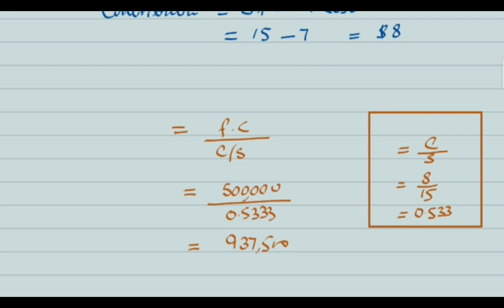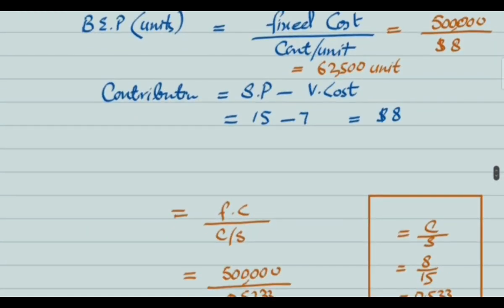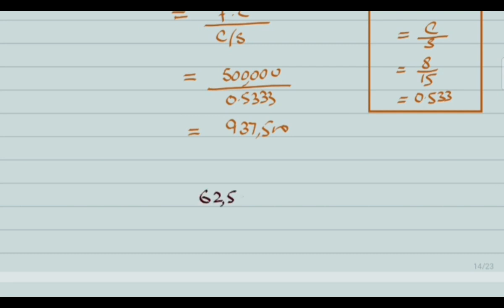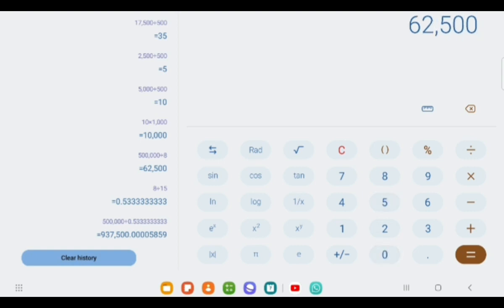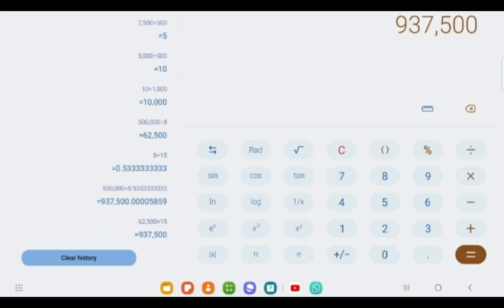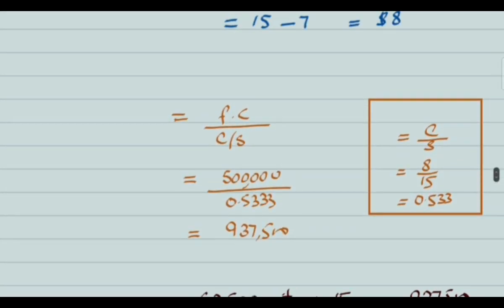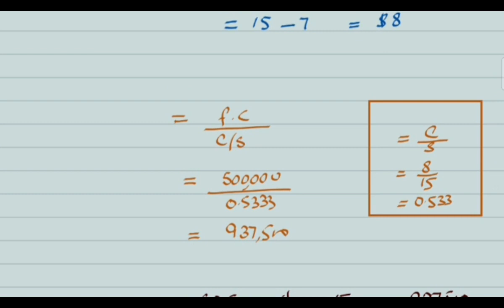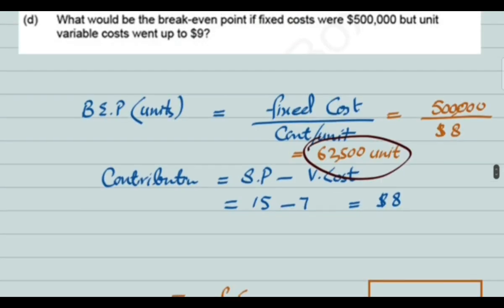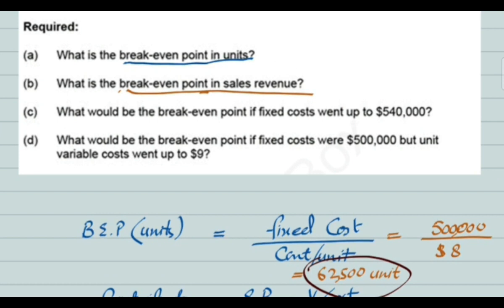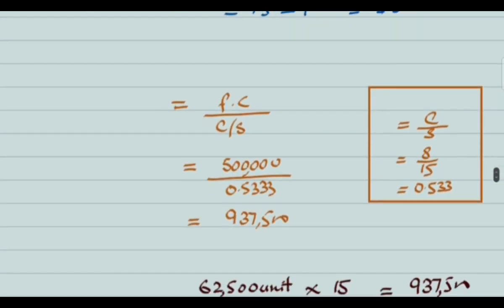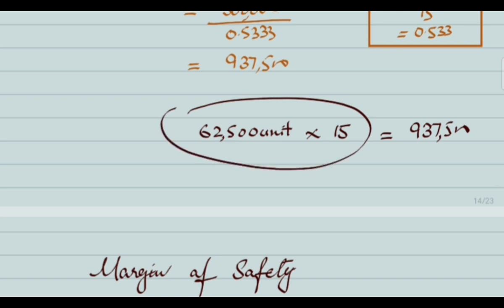That is one way to find break-even point in terms of sales revenue. The second way: you can multiply the break-even point in units by the sale price per unit. So 62,500 units multiplied by $15 gives the same answer of $937,500. If you have already calculated break-even in units, it is easier to simply multiply by sale price per unit.